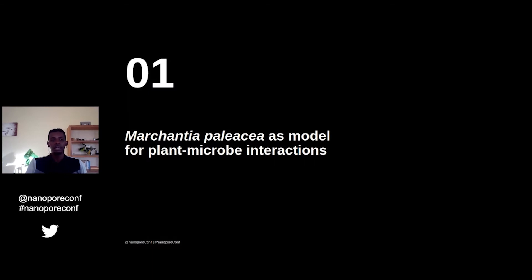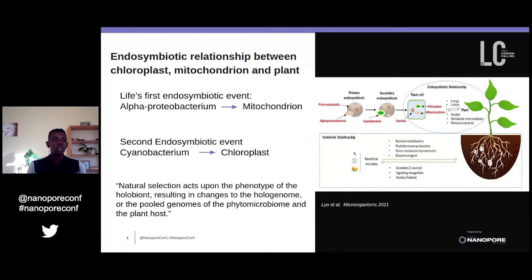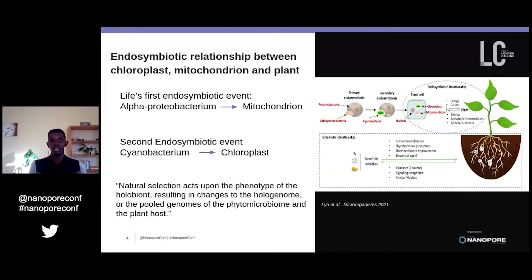We assume that life has evolved on Earth from a prokaryotic cell after an endosymbiotic event with an alpha-proteobacterium that we know later as the mitochondria. The cells that survived from that first endosymbiotic event were exposed to another event, this time with cyanobacteria, later evolved as the chloroplast.